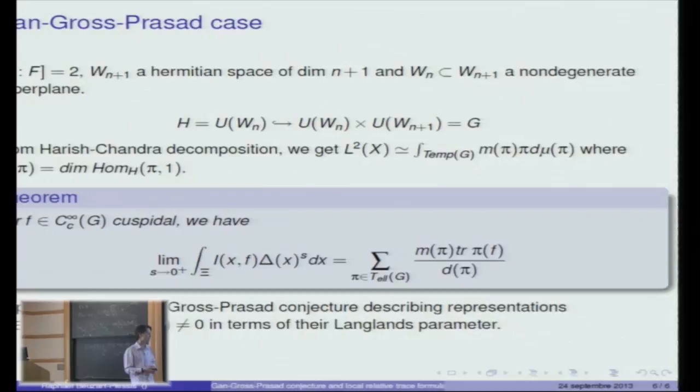My goal now is first to extend this formula for a group over the real field, because here it's only true for p-adic groups. After that there are other situations where such formulas can be of some help. For example, there are other local conjectures of Gan-Gross-Prasad that have not been solved yet, and I think there should be such a formula in these cases too. I will stop here and I'm sorry I exceeded my time a little bit. Thank you very much.